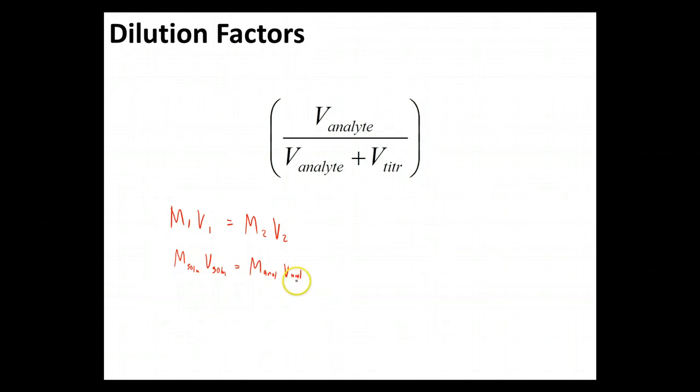Now notice that when we rearrange this, we can take our molarity and multiply it times the volume of our analyte. Let's bring our volume of our solution over because what we really want to know is the current concentration of our solution. That's what we're going to be working with. So we're going to divide this whole side by the volume of our solution.